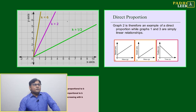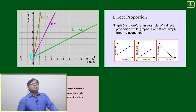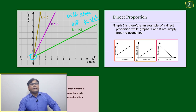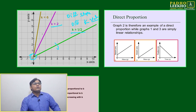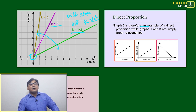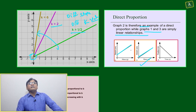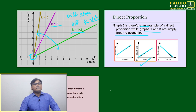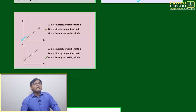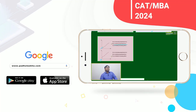Now, combining different types of variation: all lines going through the origin are directly proportional, with different slopes — different k values. If k = 1/2, the line is shallow; k = 2, steeper; k = 6, even steeper, moving from the x-axis toward the y-axis. In a graph example, graph two passes through the origin, so it is a direct proportional relation, while graphs one and three are simply linear relations. If a graph passes through the origin, it is directly proportional; if not, it is linearly related.